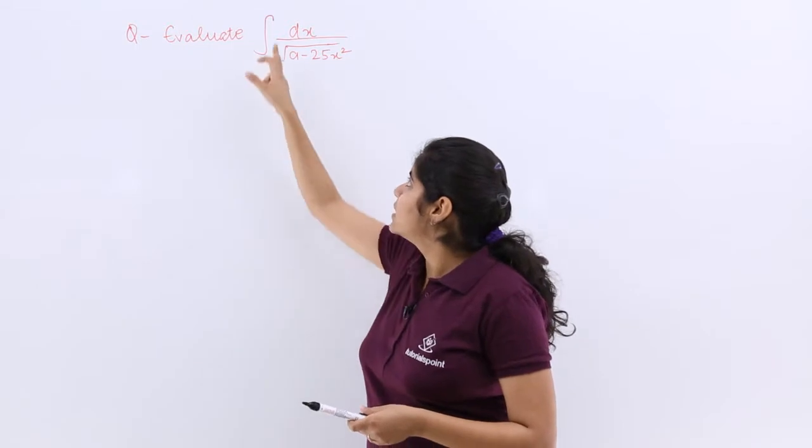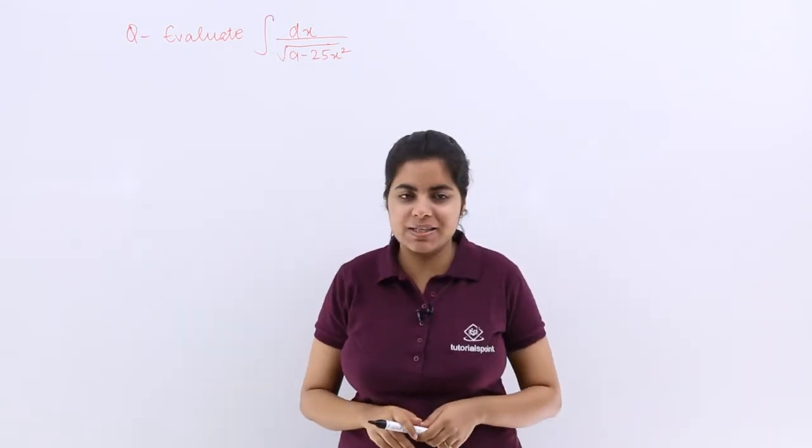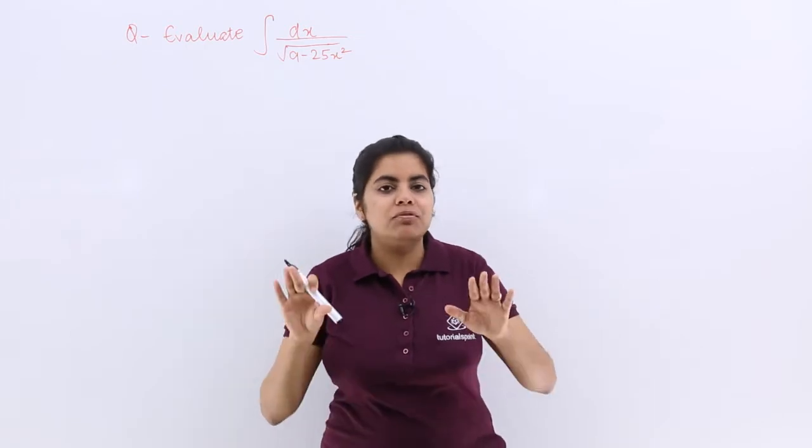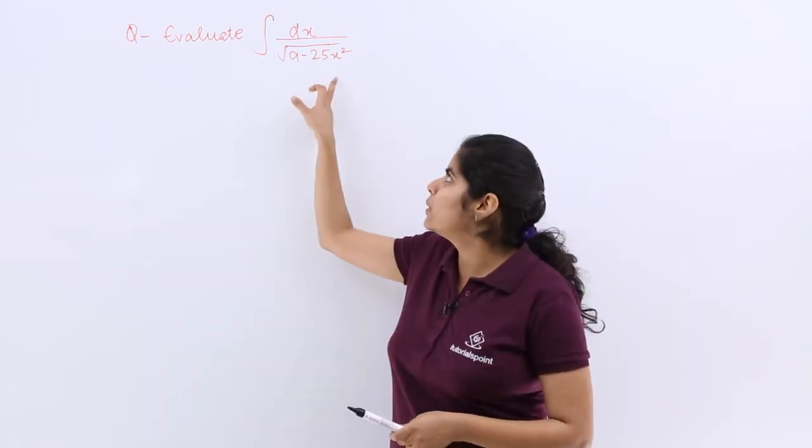It says, evaluate dx upon under root 9 minus 25x square. Now see, we don't have the coefficient of x square as 1. We have a 25.